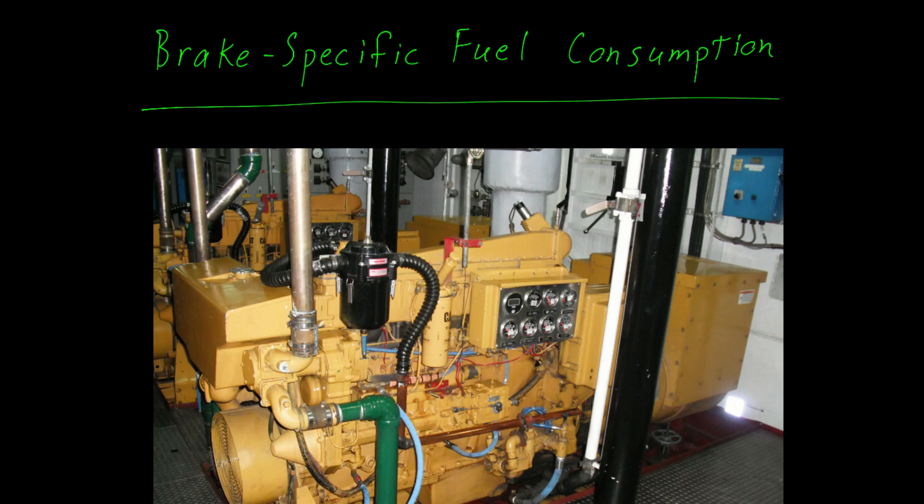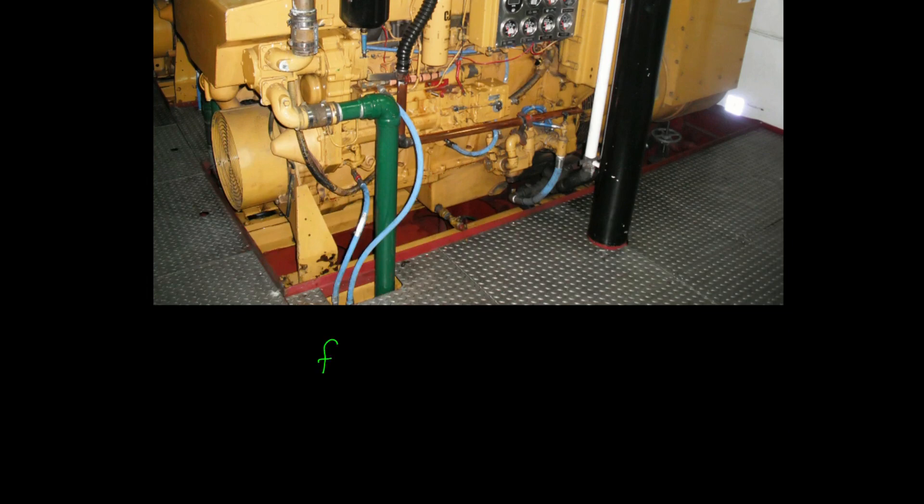This allows us to compare this little Cat 3406 to some of the largest two-stroke diesel engines that you'll find. The equation is very simple: it's fuel consumed divided by the power.